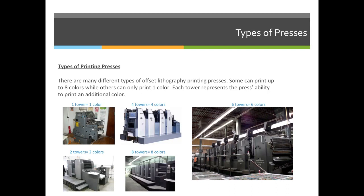Every time a sheet of paper goes through a tower, an impression occurs. So if this is a four-color process printing press — cyan, magenta, yellow, and black — there's an impression on the first tower, an impression on the second tower, an impression on the third tower, and an impression on the fourth tower. However, when we calculate impressions for costing for the press, we're only concerned with whether the sheet passed through the press. So even though a sheet of paper goes through this press and has four colors applied to it, it only goes through the press once, so it's one press impression.